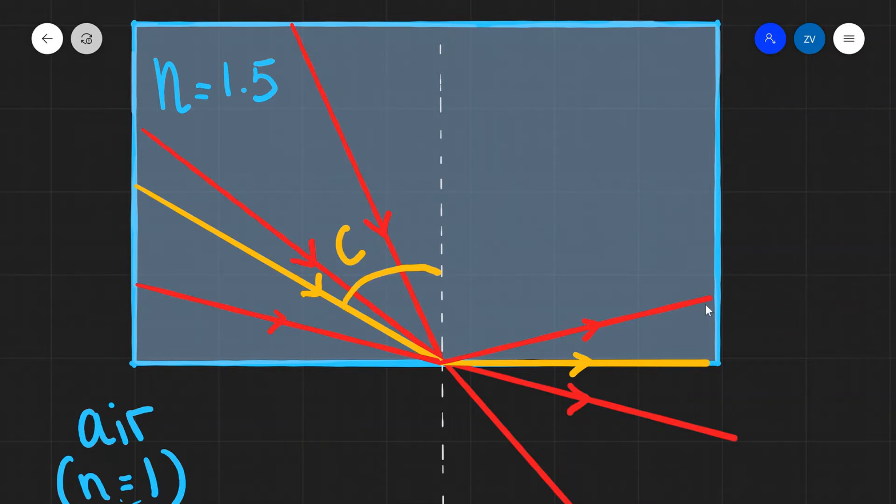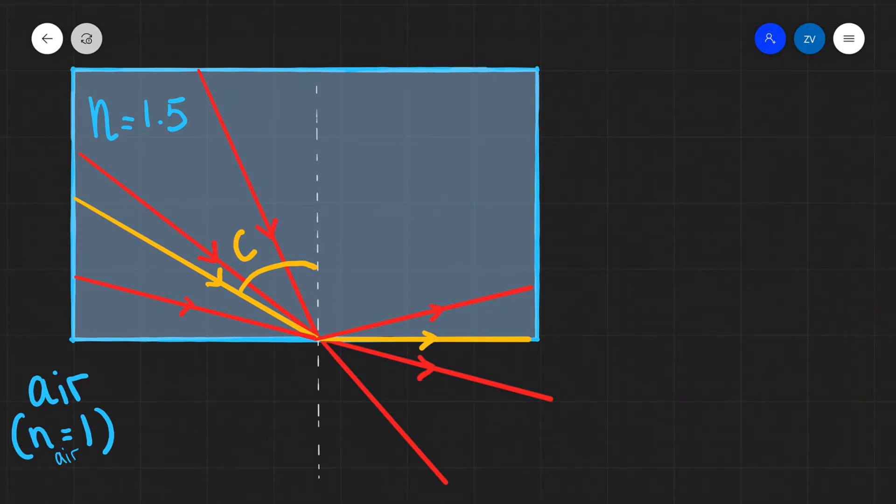Okay now let's see if we can derive a formula for the critical angle. We're going to need to use Snell's law. If you can't quite remember what Snell's law is have a look for my video on Snell's law and refraction.